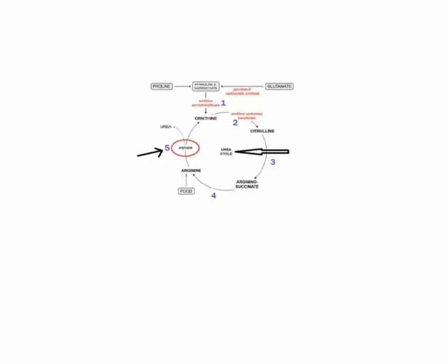Arginase catalyzes the fifth and final step in the urea cycle, a series of biochemical reactions in mammals during which the body disposes of harmful ammonia. Specifically, arginase converts L-arginine into L-ornithine and urea.